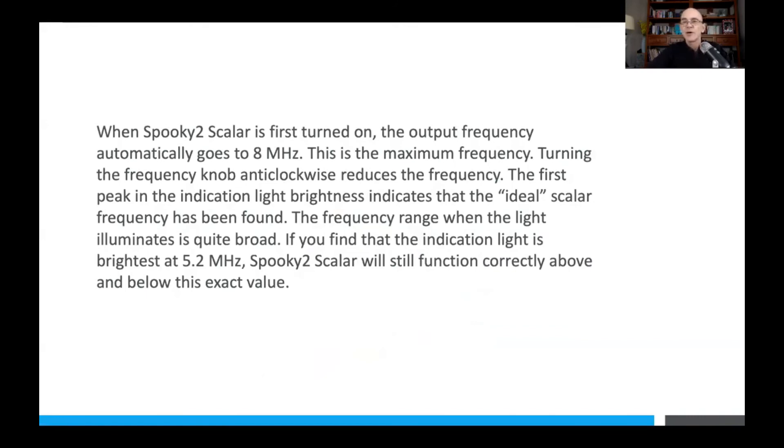When Spooky Scalar is first on, it immediately runs at eight megahertz. That's its maximum frequency. You then turn the frequency tuning knob anti-clockwise, and this reduces the frequency. The first spike in the light brightness indicates that the ideal scalar frequency has been found. The frequency range is quite broad. The range is probably close to one megahertz. If you find that the light is brightest at around 5.2 megahertz, that's good. But the scalar unit will still work at 4.8 megahertz or 5.6 megahertz. It's a wide range around the point where that tuning light is its brightest.